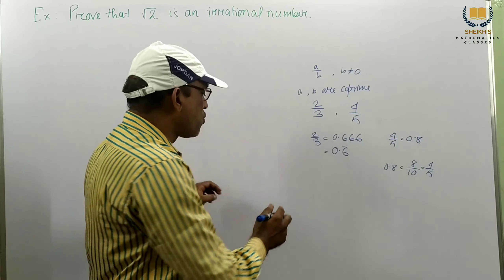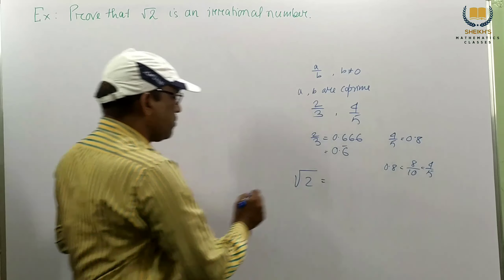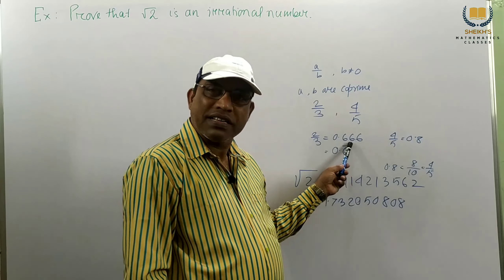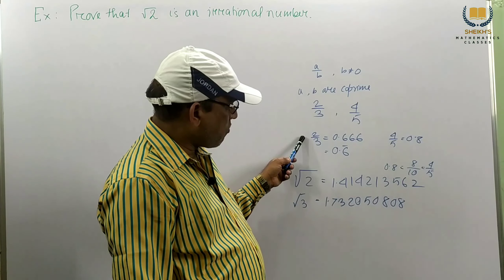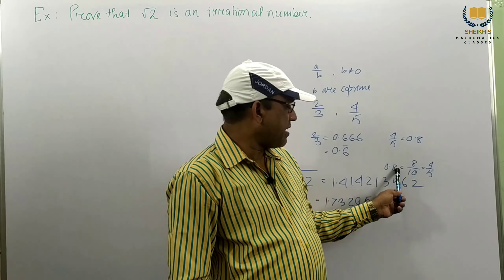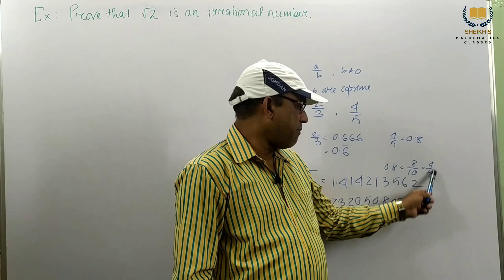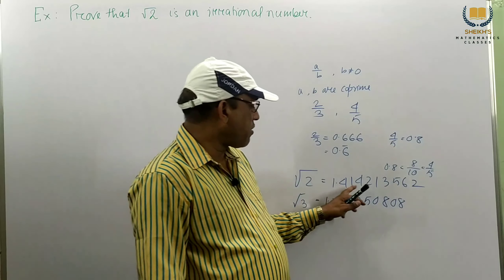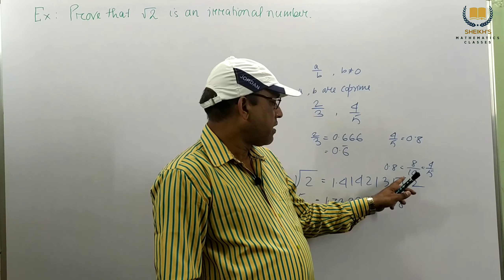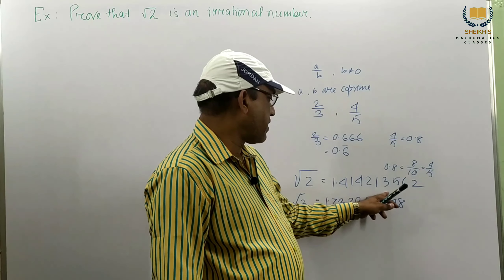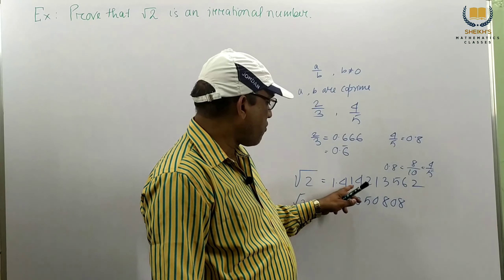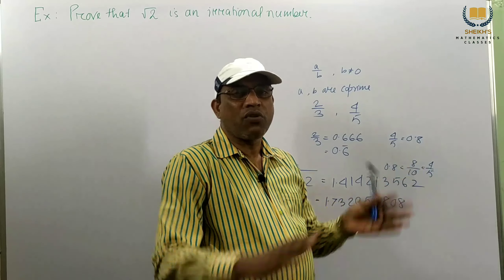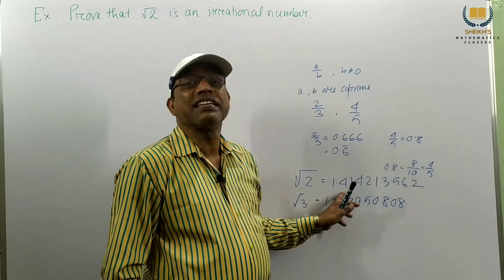But if we write root 2 — root 2 is 1.414213562 — no number is repeated. It is not like 0.666 repeated where we can write a bar. Here the digits 41, then you get 42, then 1.3 — all numbers are distinct, no number is repeated. So this is an irrational number.